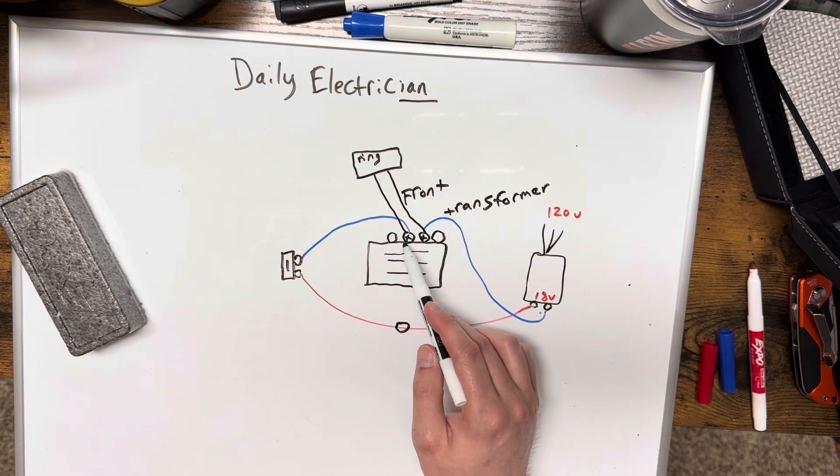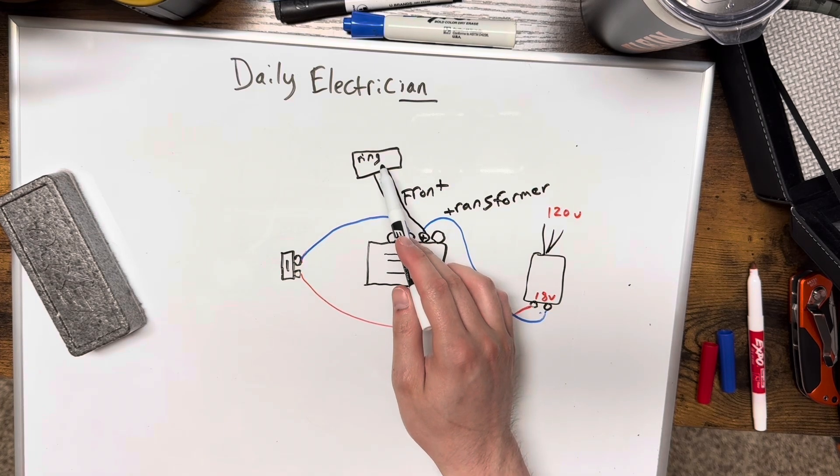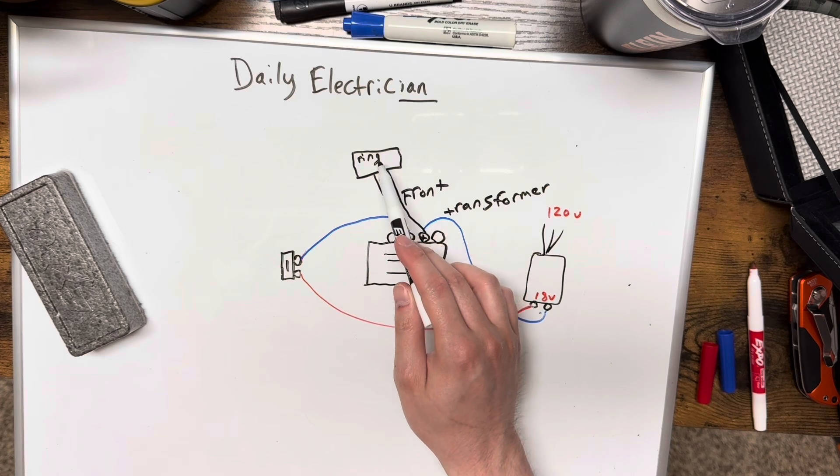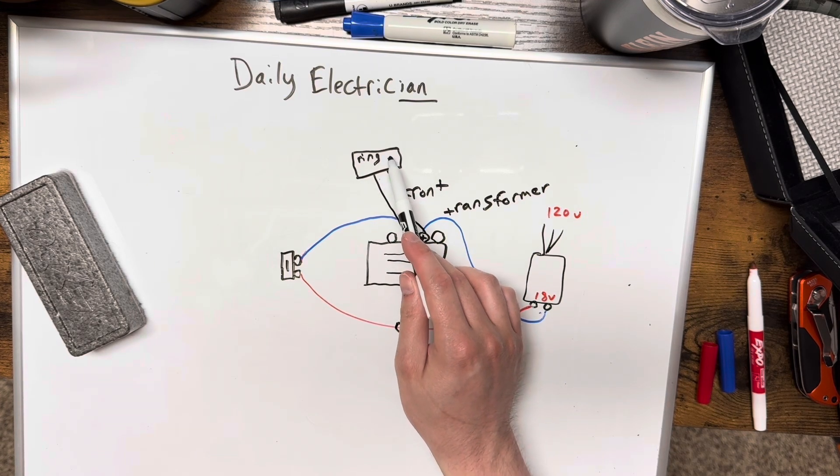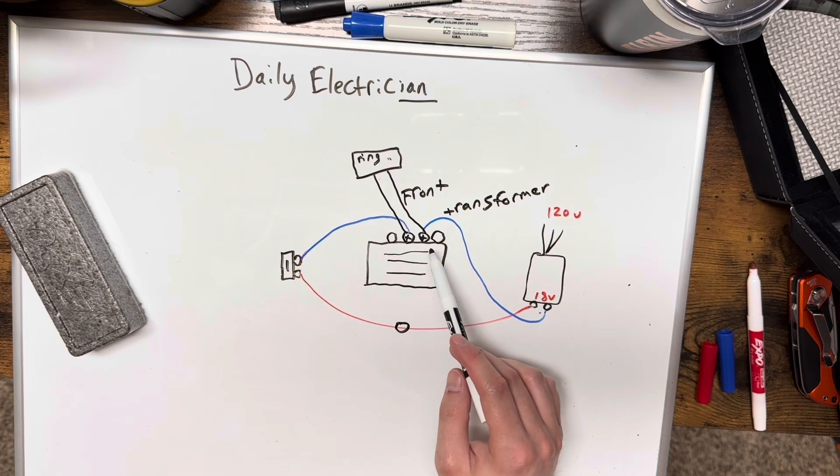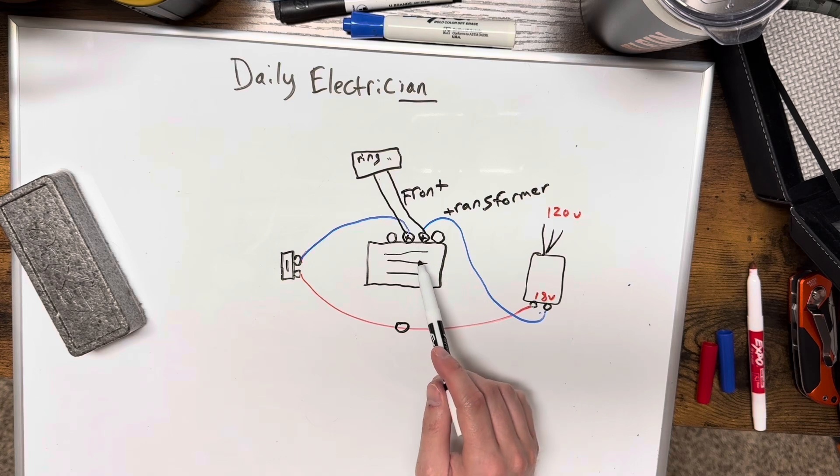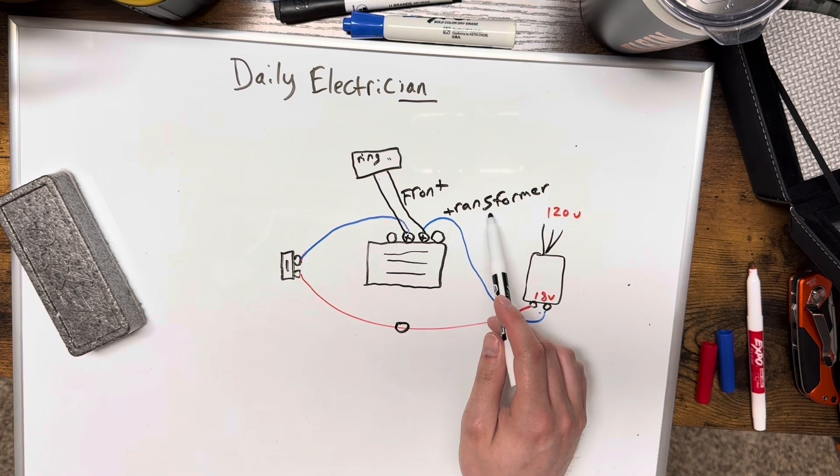Then the little Ring box goes on those same wires and it doesn't matter which screw it goes to on this Ring box. I don't know if this matters on left or right for the in and out. I believe it does. The one going to the transformer should go to the transformer and then the front will probably go to the doorbell.